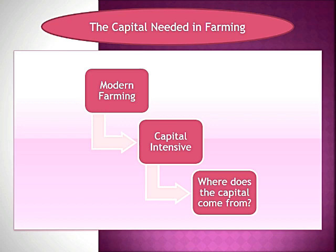The next topic is the capital needed in farming. Capital means where you need a large amount of money. Modern farming method is a capital-intensive method — capital-intensive means you need a lot of inputs. You need tractors, HYV seeds, threshers, sprinklers — everywhere you need to invest money. So from where does this capital come for our farmers?